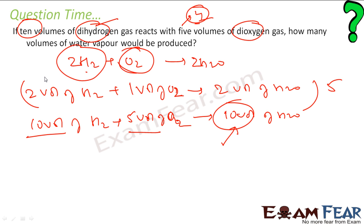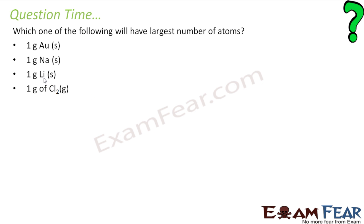In that case you have to check and give the answer based on the limiting reagent quantity. Now, which 1 gram sample will have the largest number of atoms? 1 gram of Au will have 1/197 × 6.023 × 10²³ atoms.